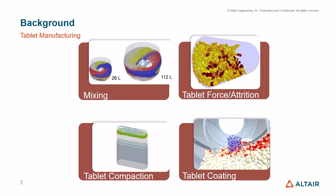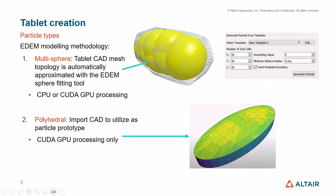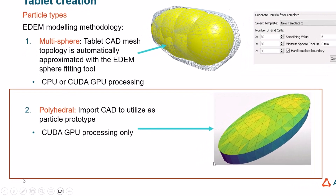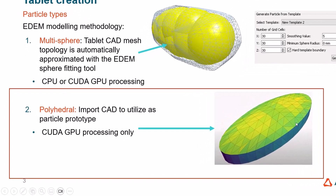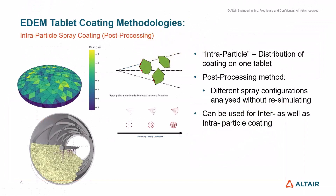EDEM can also be used in different stages of tablet manufacturing, including mixing, analysis of forces, damage, the compaction process, as well as the tablet coating process. There are many different shapes of particles available in EDEM: cylinders, multi-sphere particles, and polyhedral particles. For the ray tracing tablet coating method, we're looking at polyhedral particle analysis today.